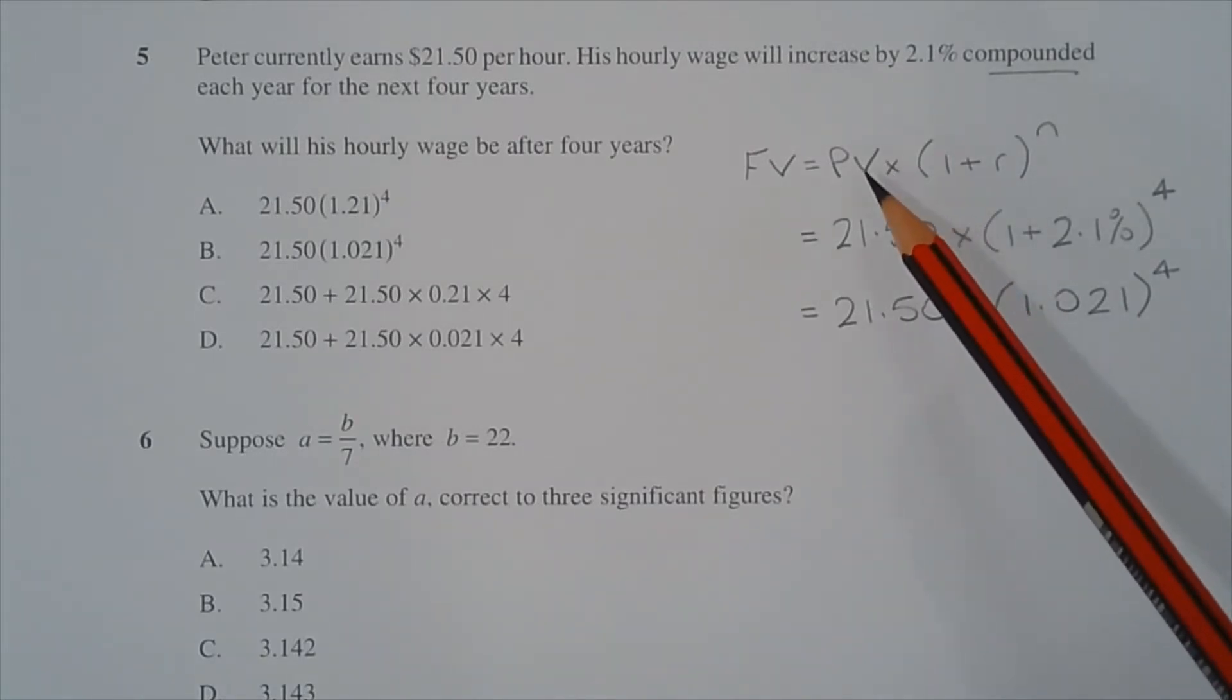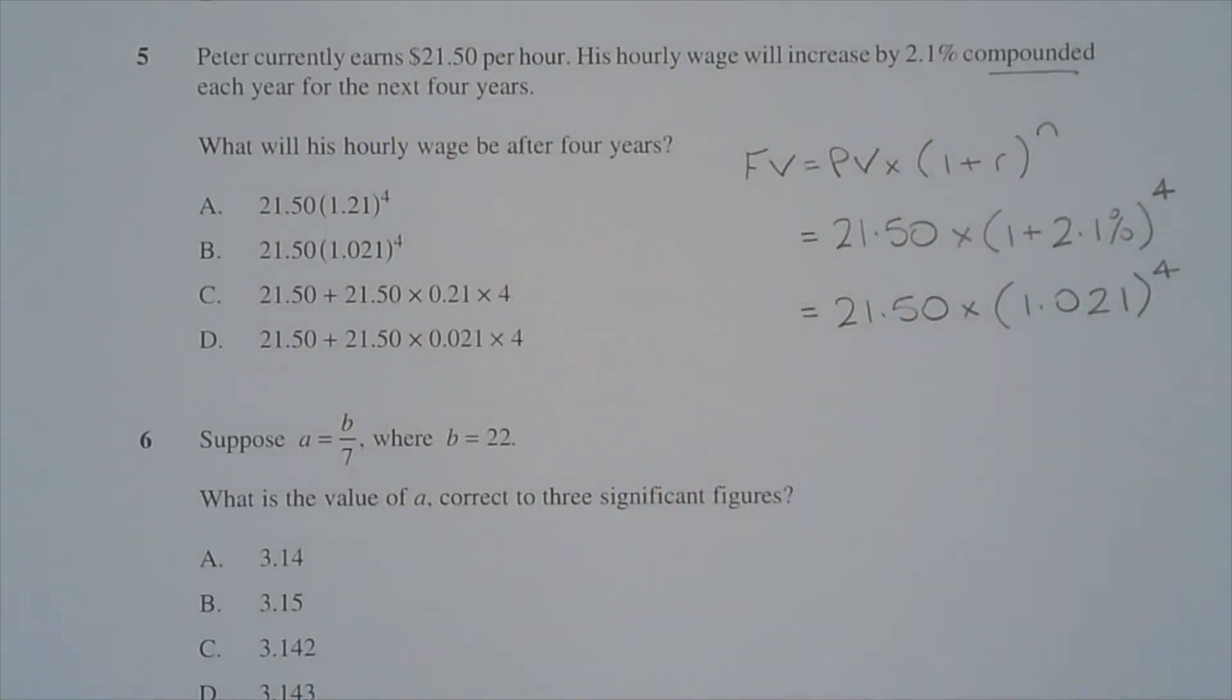The present value corresponds to Peter's current wage, which is $21.50 per hour. So that equals $21.50 multiplied by 1 plus 2.1%, that's the annual rate of increase, to the power of 4 since it's over 4 years.